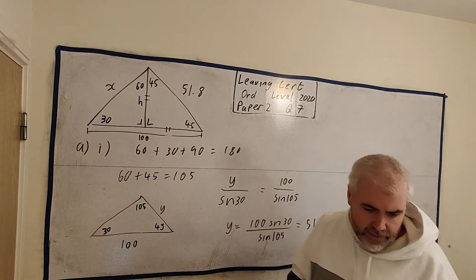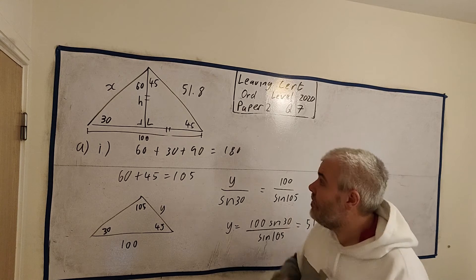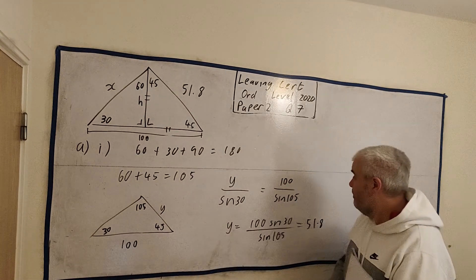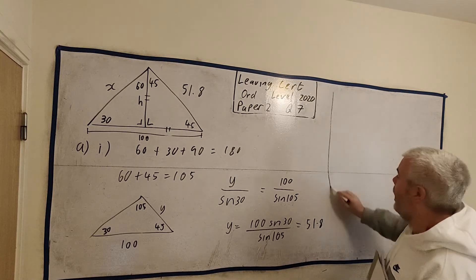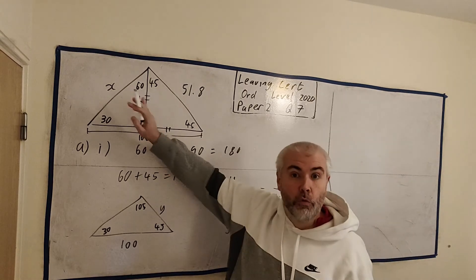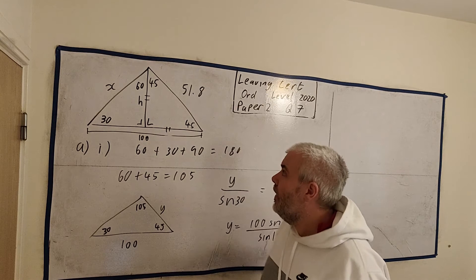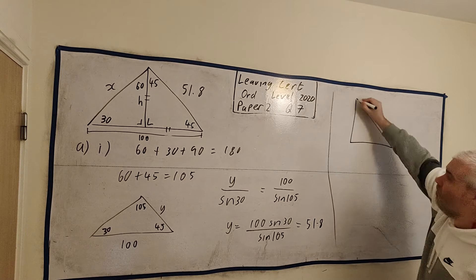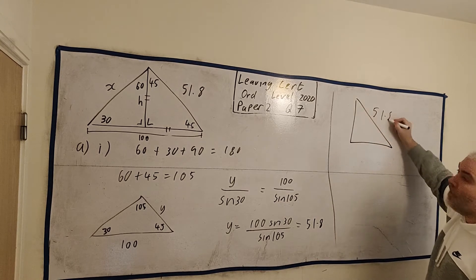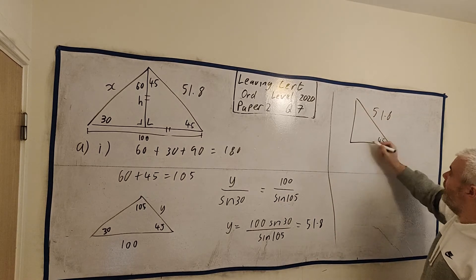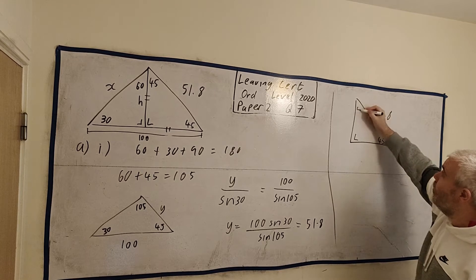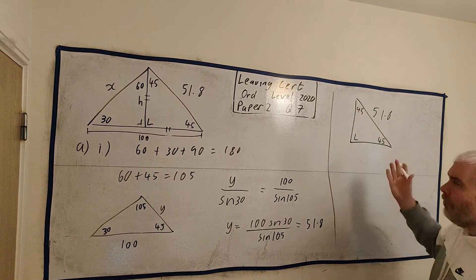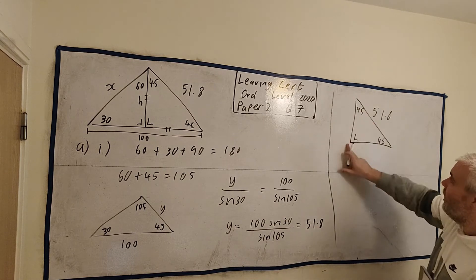The next part then asks us to find the value of H and X. H is the height here, and X is the length here. There's multiple ways to do this. I would now start using the right angle starter here. I would use this right angle on the side. I know lots about it. Let me draw it over here. I know that's 51.8. I know 45. I know right angle. I know 45 up here. That's more than enough again. That's four things, more than enough, especially to find this H here.